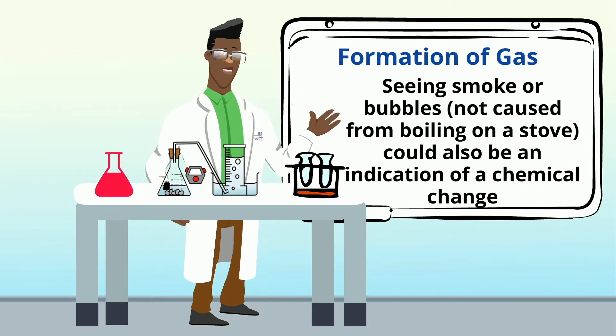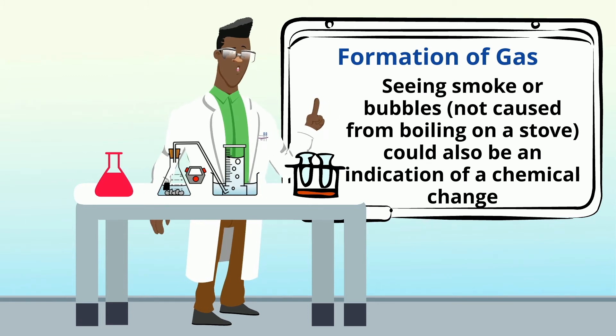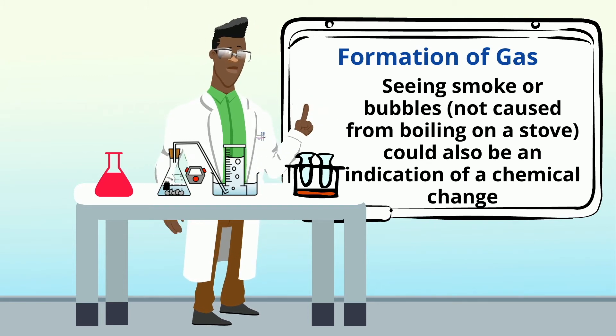Formation of gas: Seeing smoke or bubbles not caused from boiling on a stove could also be an indication of a chemical change.